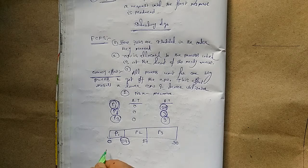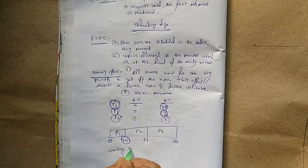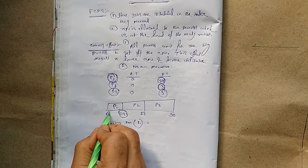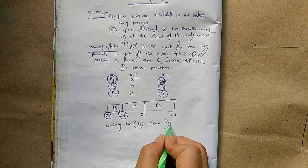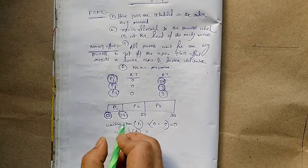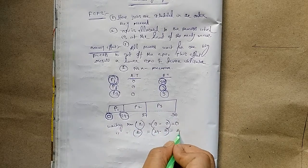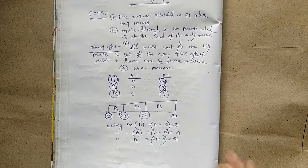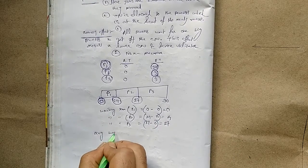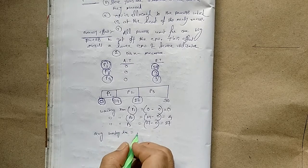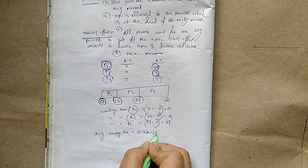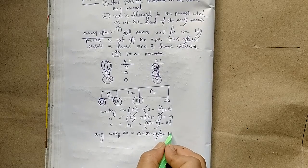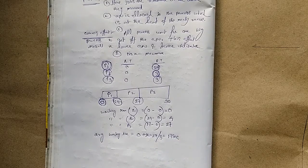Computing waiting times: P1's start time is 0, arrival time is 0, so waiting time is 0. P2's start time is 24, arrival time is 0, so waiting time is 24. P3's start time is 27, arrival time is 0, so waiting time is 27. The average waiting time is (0 + 24 + 27) / 3 = 17 seconds.